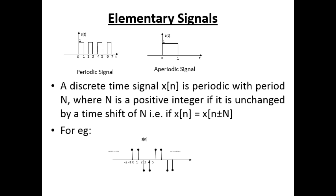For discrete time, x(n) is periodic with period N, where N is a positive integer, if it is unchanged by a time shift of N — that is, x(n) = x(n ± N).